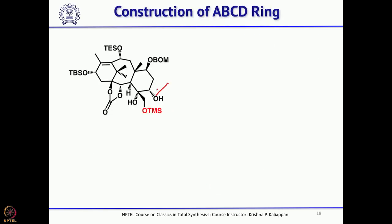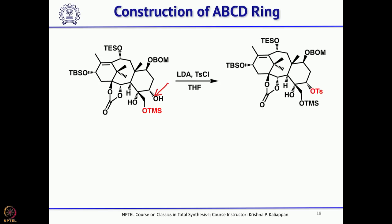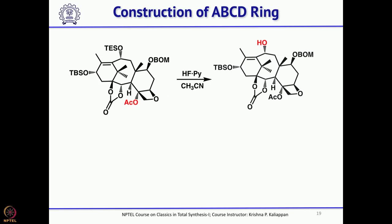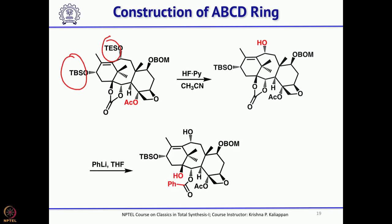The secondary alcohol was made into a good leaving group (nosyl group), then treatment with DBU gives the corresponding oxetane. Then acetic anhydride and pyridine acetylates the hydroxyl group. HF/pyridine selectively cleaves the TMS group in the presence of TBS. The cyclic carbonate is then opened to get the benzoyl and bridgehead hydroxyl groups.